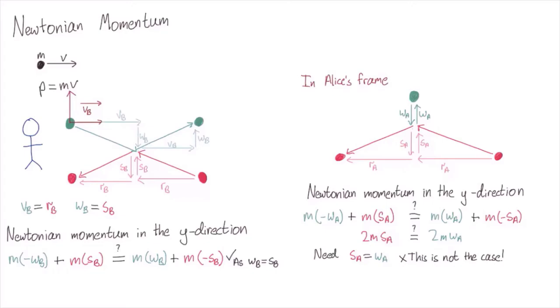The pink ball, however, is moving towards her. Time dilation means Alice will measure its vertical velocity to be slower. Thus, sA is smaller than wA, and Newtonian momentum is not conserved in the y-direction.